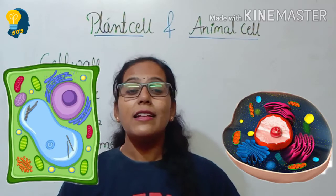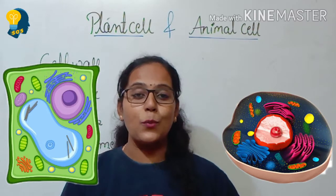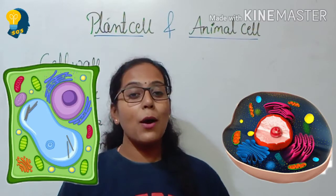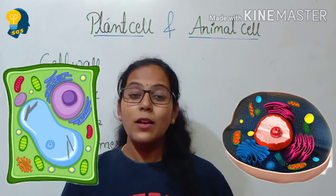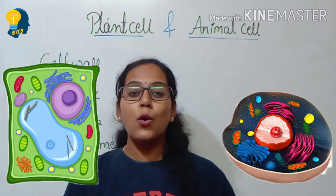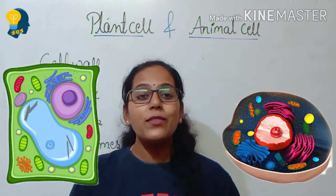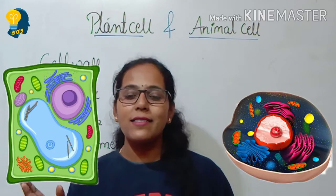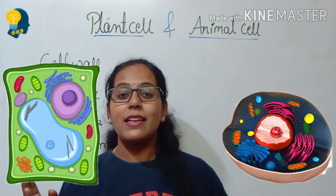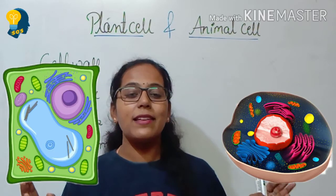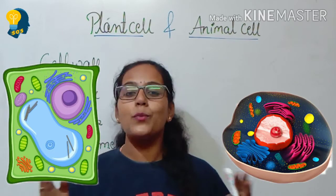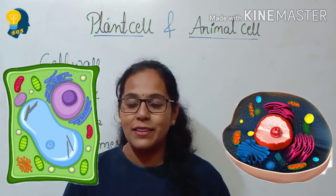The fourth difference is centrosomes. Centrosomes are absent in the plant cell, whereas in the animal cell the centrosomes are present.